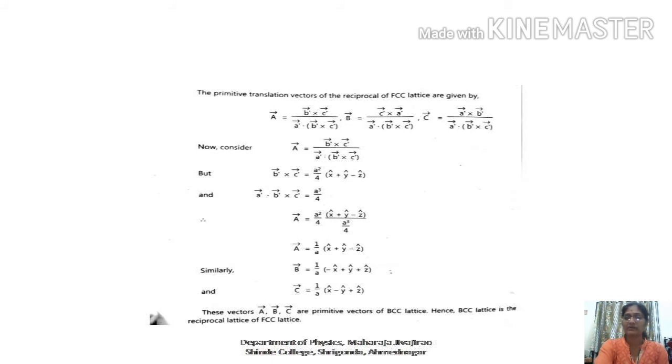In our last lecture we have seen that the primitive translational vectors a', b', c' in the case of BCC lattice — and the right-hand side of these three vectors resembles the BCC lattice. Therefore, the left-hand side is the reciprocal of the FCC lattice and the right-hand side is the BCC lattice. Therefore, one can conclude that the reciprocal of the FCC lattice is the BCC lattice.